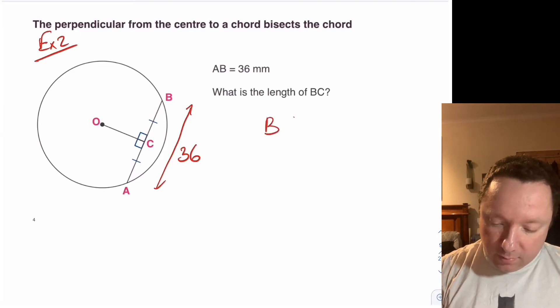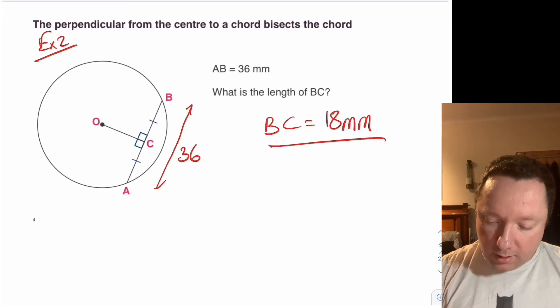So BC must equal 18 millimetres. And the reason for that is again because we've got a chord which has been cut in half by a radius at right angles.